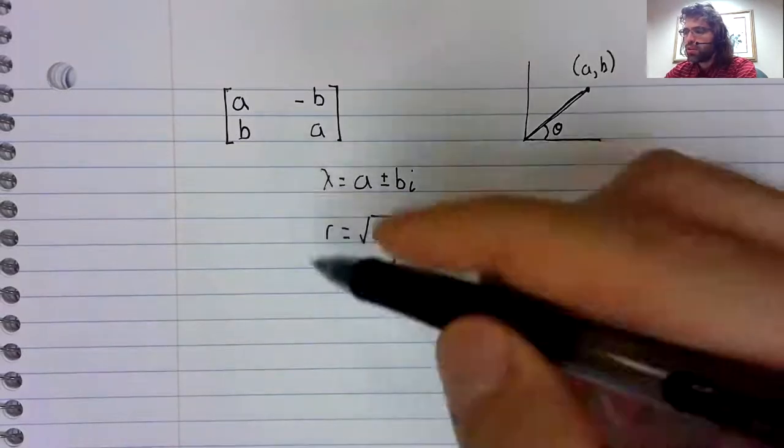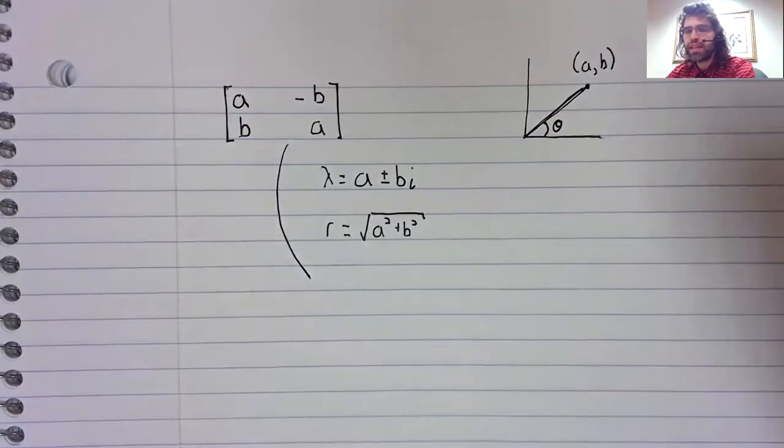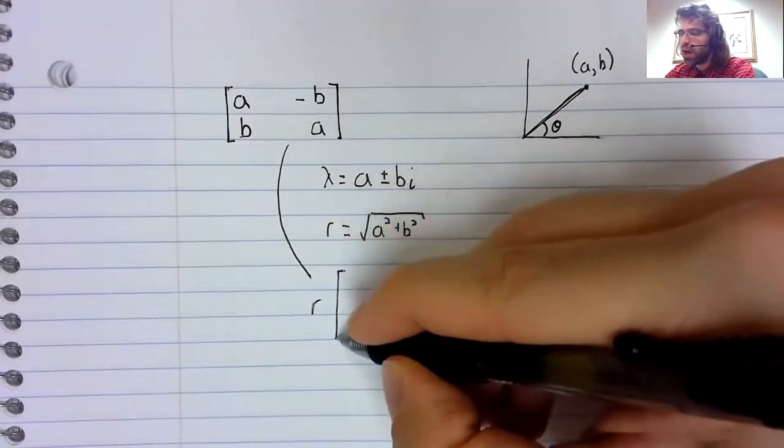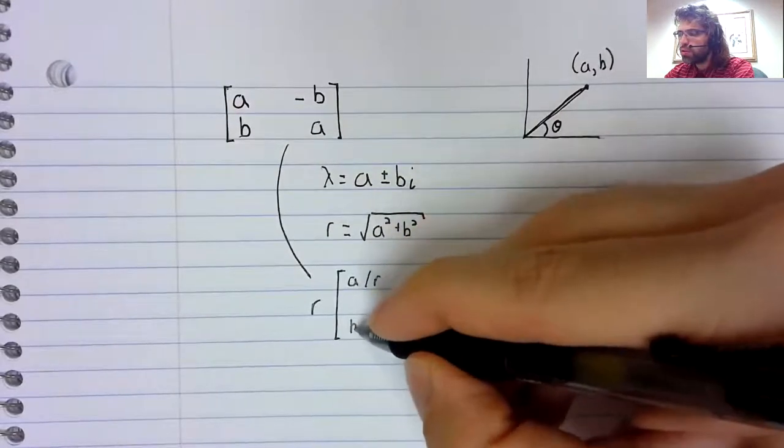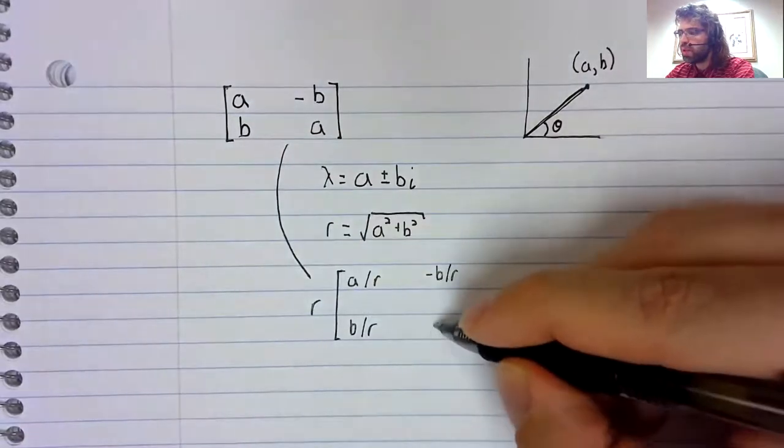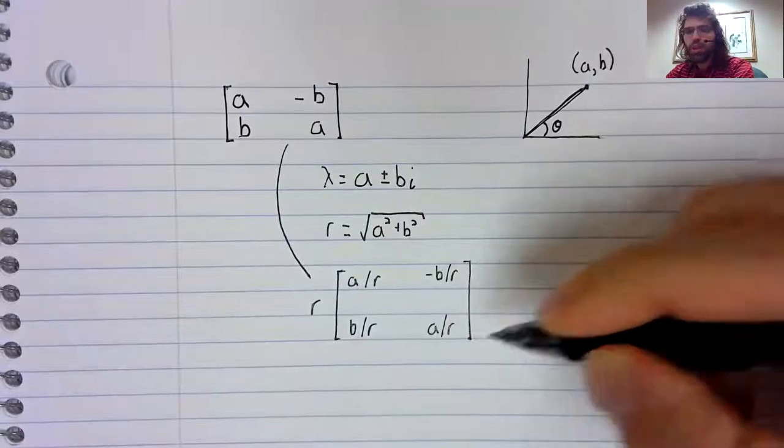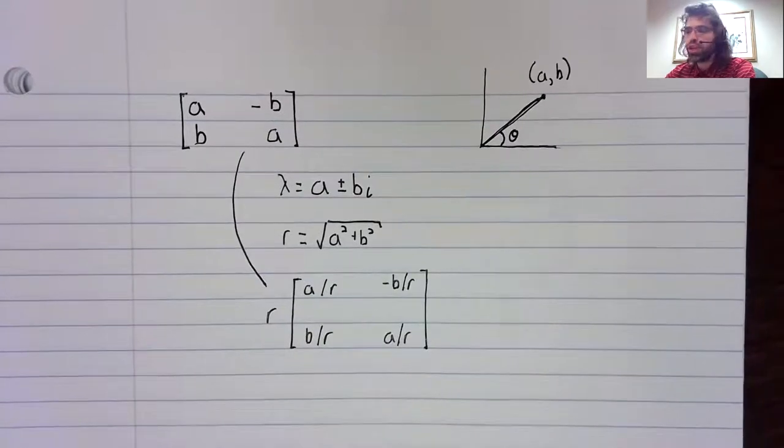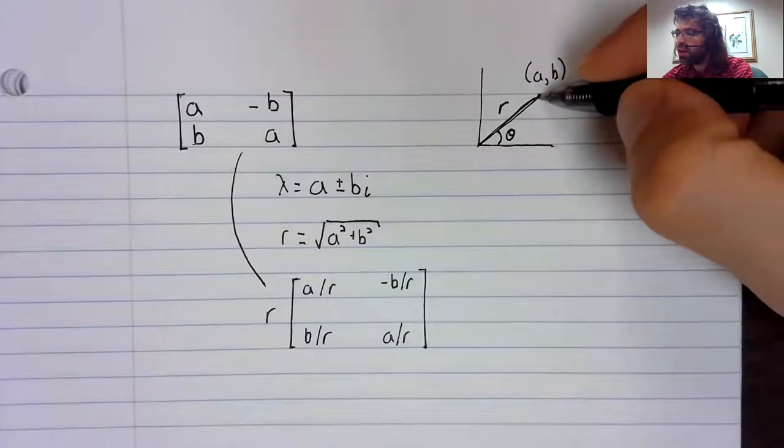And now we're going to take this matrix and we are going to rewrite it. We're going to pull an R out, so all of these terms in the matrix will turn into quotients.